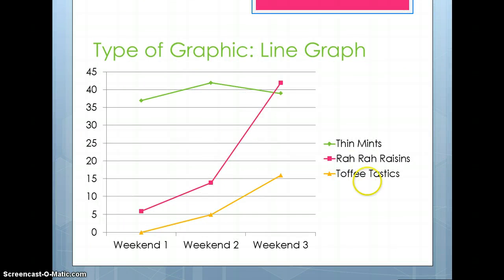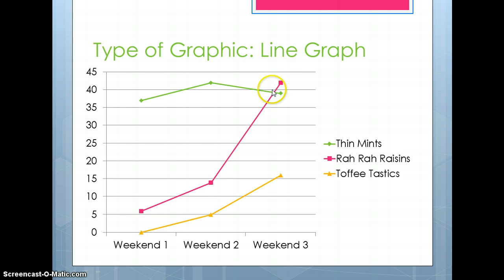Let's look at this one — the type is a line graph, and we're staying on the same topic: cookies. We're looking at Thin Mints sales over Weekend 1, Weekend 2, and Weekend 3. Think about what you can learn. We have Thin Mints starting way up here — obviously we sell more Thin Mints than the two new cookies this year, the Rah Rah Raisins or the Toffee Tastics. But look — the Rah Rahs took off at the end and actually outsold. What kind of conclusions can you make? Maybe Rah Rahs got popular: people tried them in the first couple of weeks, started talking about them, and by the third weekend the Rah Rahs were even more popular than the Thin Mints. Toffee Tastics, on the other hand, didn't do so well — we have to ask ourselves why.